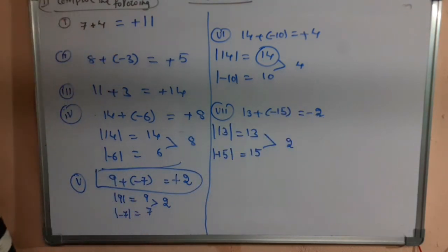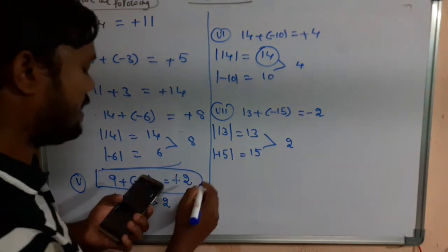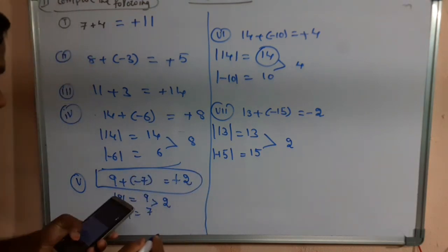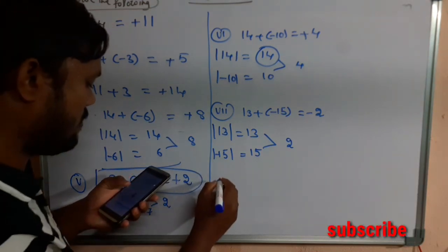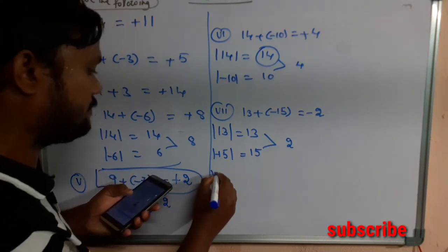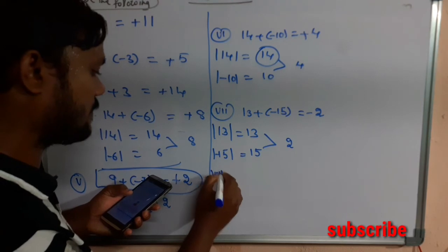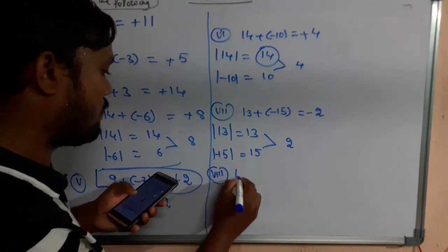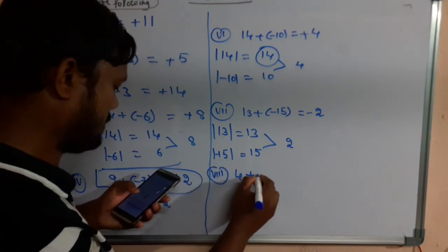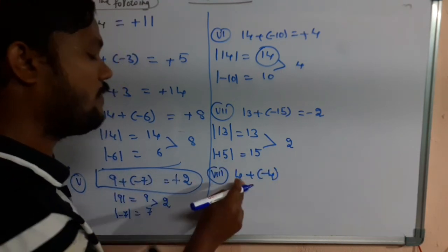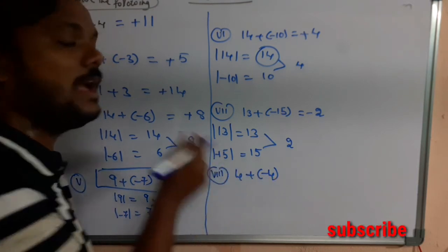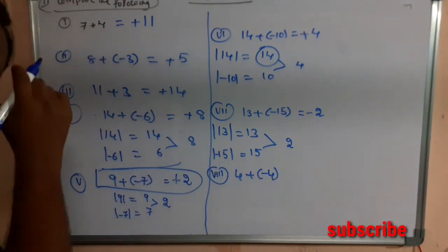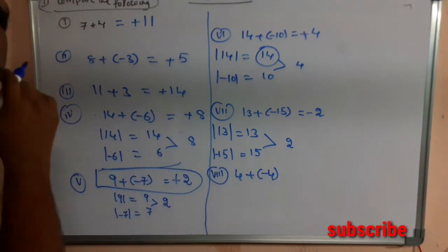The eighth question is 4 + (-4). These two are additive inverses of each other. When you add two additive inverses, you get 0.